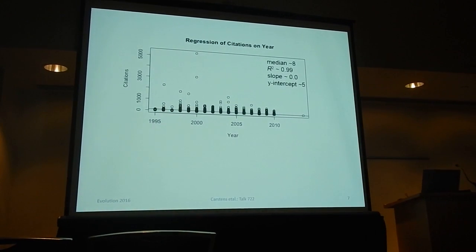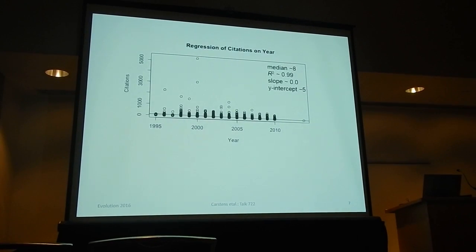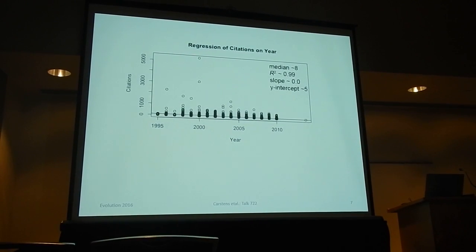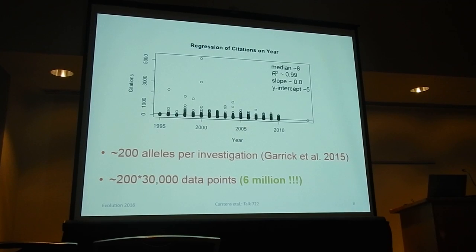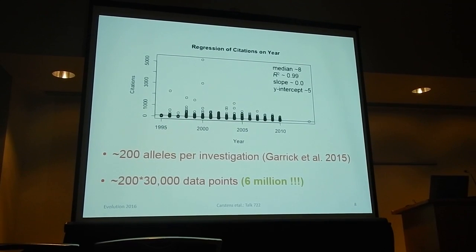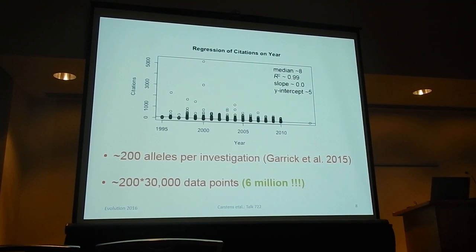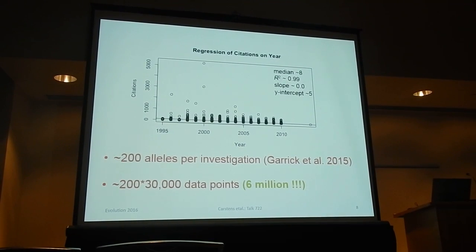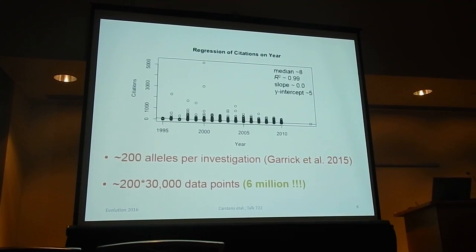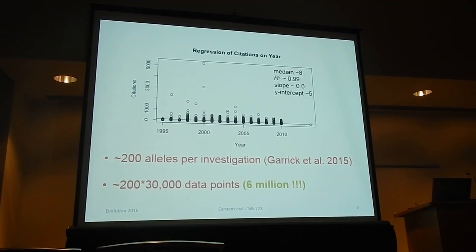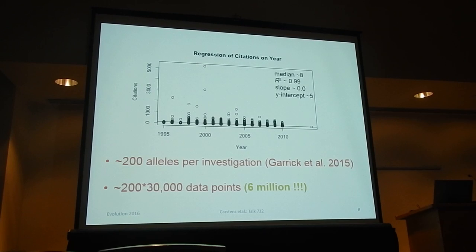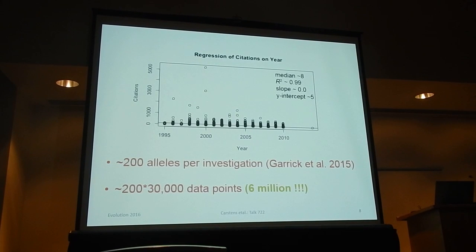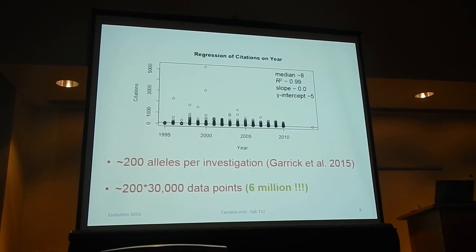We're doing this because these data aren't being used that much, and we're paying a lot for them — funding agencies have collectively paid millions and millions of dollars. A few years ago, Ryan Garrick's lab and my lab did a literature review and estimated that the typical phylogeography paper collects something like 200 alleles — either from 200 individuals at a single locus or from smaller numbers in multi-locus studies. If about three quarters of phylogeography papers are data papers, this is something like six million data points — collectively a lot of data.